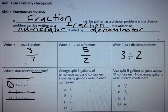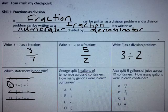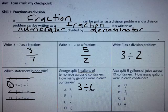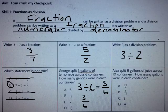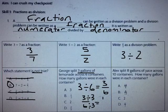George split 3 gallons of lemonade across 6 containers. How many gallons were in each container? I need to divide. 3 gallons are being split up, so I'm going to divide 3 across 6 containers. When I divide 3 divided by 6, it's 3/6 written as a fraction. That answer isn't there, so I need to simplify. The largest number that goes into both 3 and 6 is 3. When I simplify 3/6, the result is 1/2. The correct answer is B.